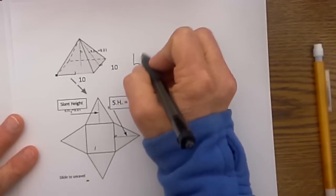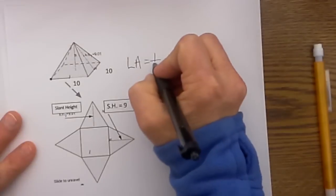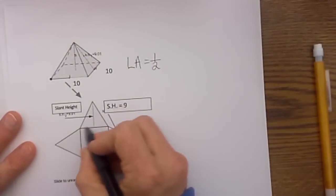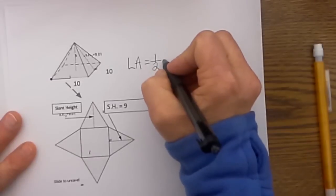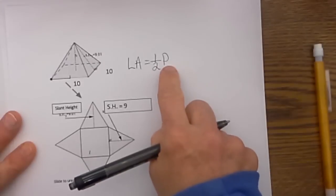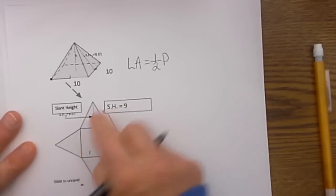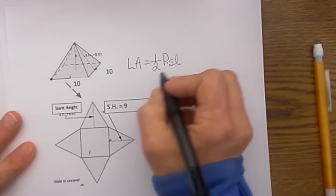For the lateral area we are going to use the formula 1/2 base times height. Instead of being the base just being one triangle we are going to do the base of all four. So that is actually the perimeter of the base. And then we are going to multiply it by the height. The height in this case is our slant height. So it is 1/2 perimeter times slant height.